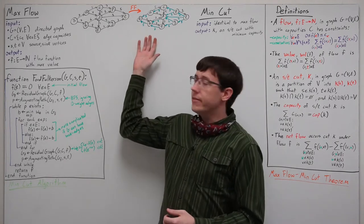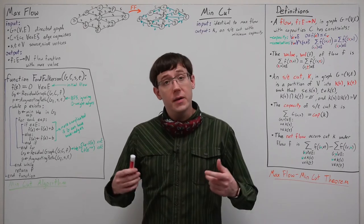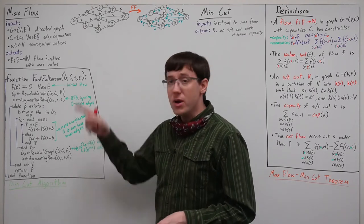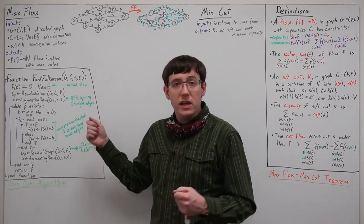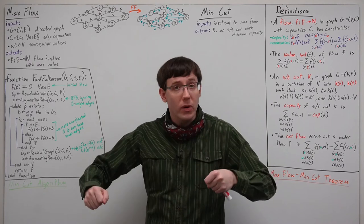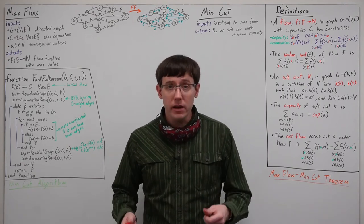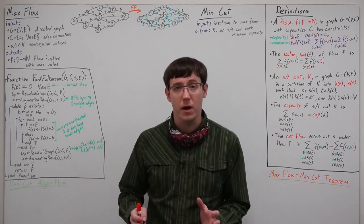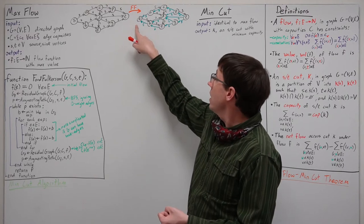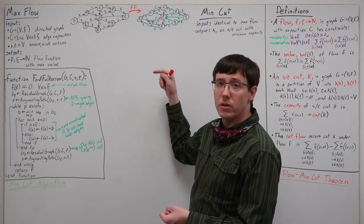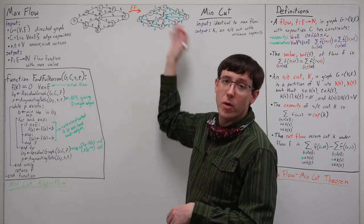The residual graph left after executing Ford-Fulkerson gives us a starting point for finding such a cut. Specifically, when we run Ford-Fulkerson, we keep going until we have eliminated any paths from s to t. So the edges used up by Ford-Fulkerson should separate s from t in the original graph. One way to get a cut is by finding the vertices still reachable from s and putting them on the s side, and putting everything else on the t side. In this residual graph we find that b, e, and d are still reachable, so our cut puts s, b, d, and e on one side and the remaining vertices on the other.